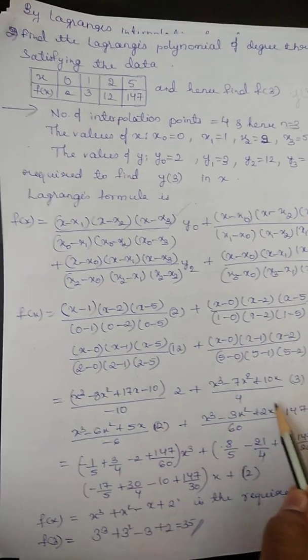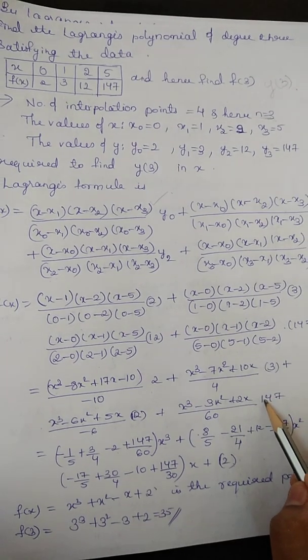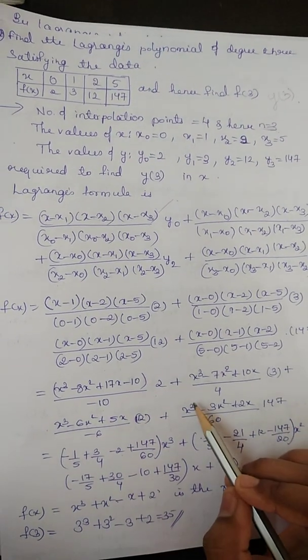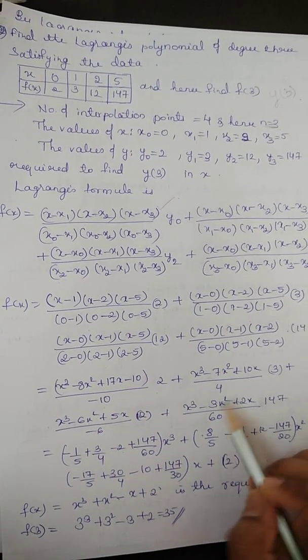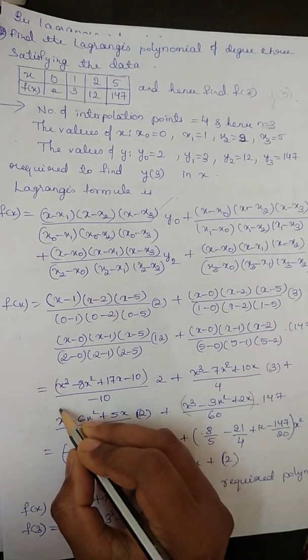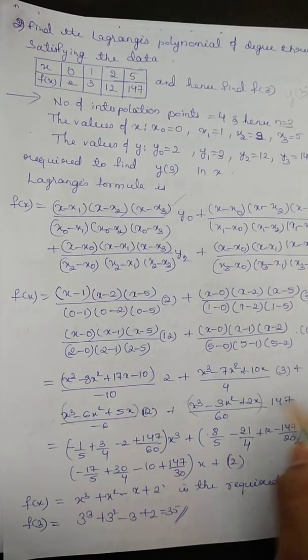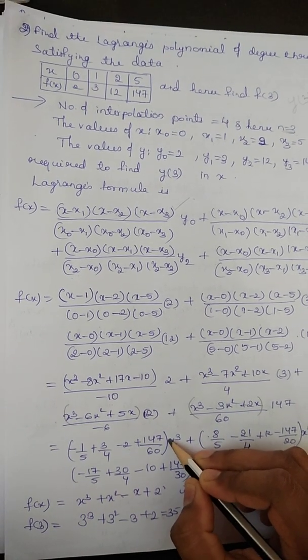Here it is 12 by 6. 12 by 6 means minus 2. Then the last term here. 147, this will be multiplied to 1, x3. So, here it is a bracket, multiply it to x3, then upon 60 as it is.